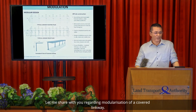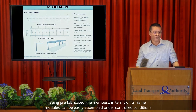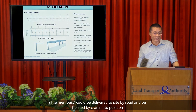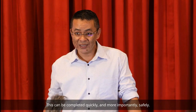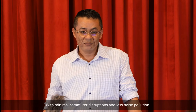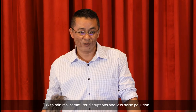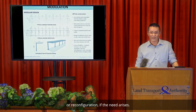Having pre-fabricated on-site, the members — in terms of their frame modules — could be easily assembled under controlled conditions. They can be delivered to site by road and hoisted by crane into position, ready for final fitting up. This can be completed quickly and safely. The installation process would be clean and unobtrusive, with minimal commuter disruptions and less noise pollution. This also allows future flexibility for extension or reconfiguration of Covered Linkway if the need arises.